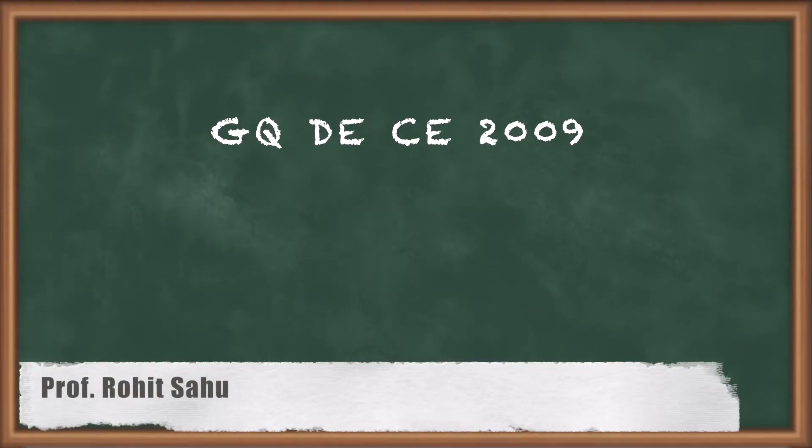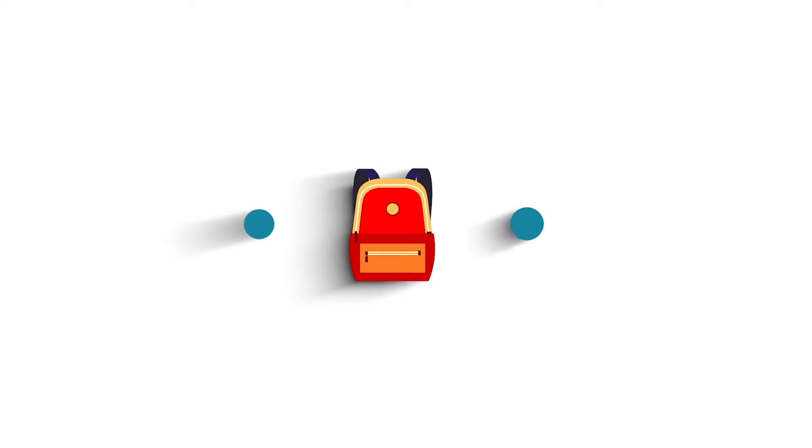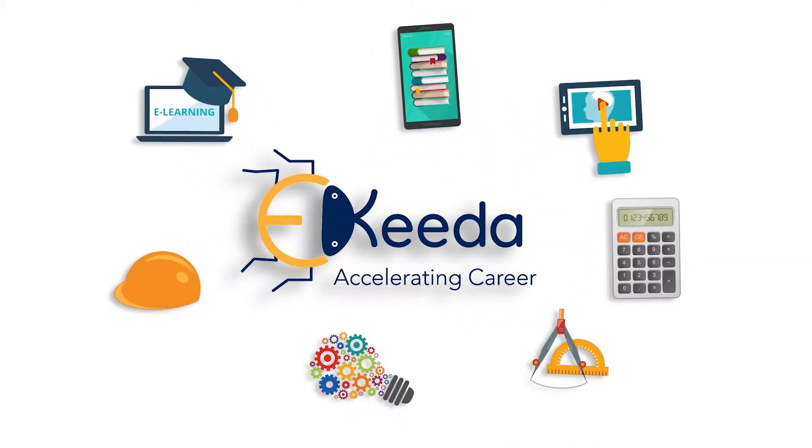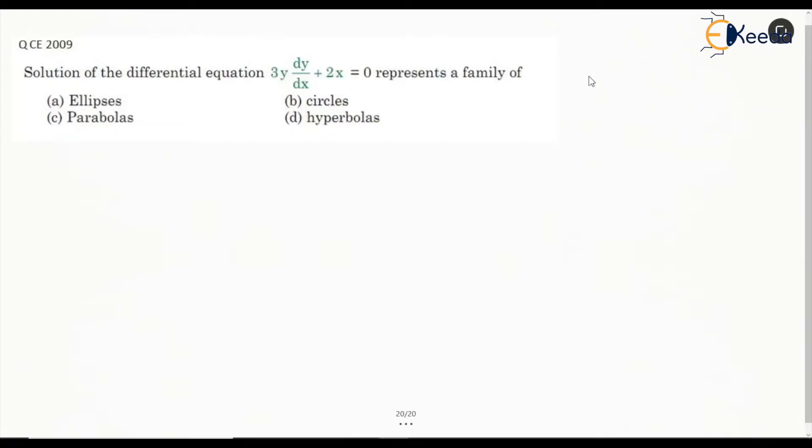Hello everyone. We will see this question from GATE Civil 2009 on differential equations. It says the solution of the differential equation 3y dy/dx + 2x = 0 represents a family of what?